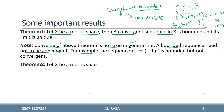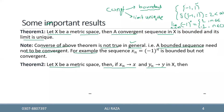Next، ہمارے پاس second theorem ہے: let x be a metric space. If a sequence x_n converges to x and y_n converges to y in x، تو d(x_n, y_n) converges to d(x, y)۔